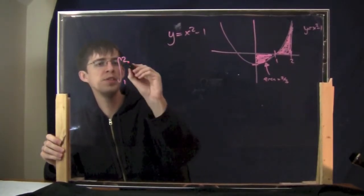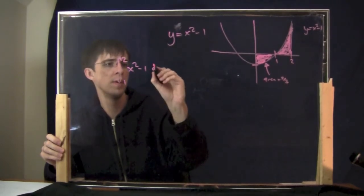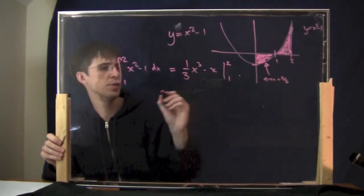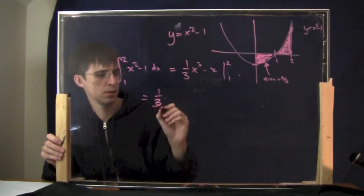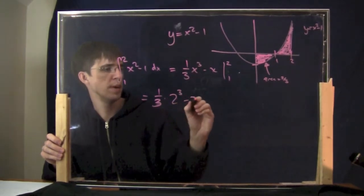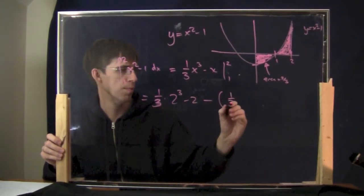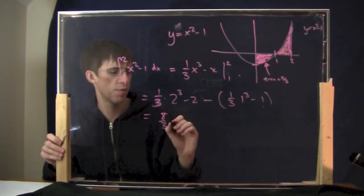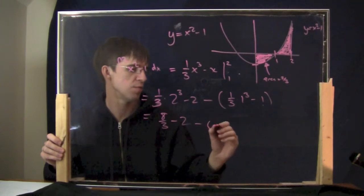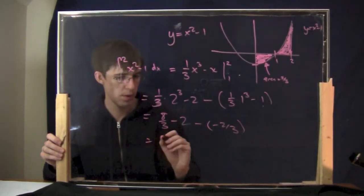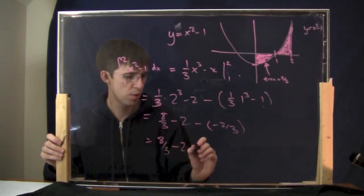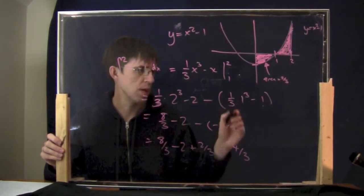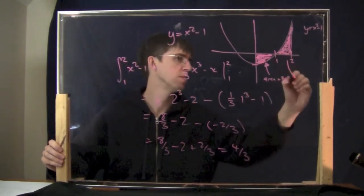Now the second area: the integral from 1 to 2 of x² - 1 dx. Same anti-derivative: (1/3)x³ - x. Plugging in 1 and 2: (1/3)(8) - 2 minus (1/3)(1) - 1 = 8/3 - 2 - (-2/3) = 8/3 + 2/3 - 2 = 10/3 - 6/3 = 4/3. So this area is 4/3.